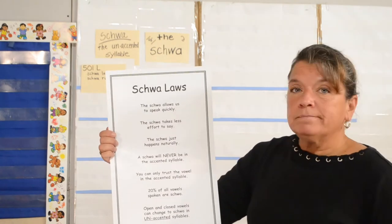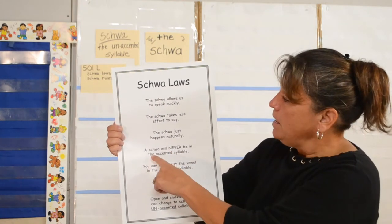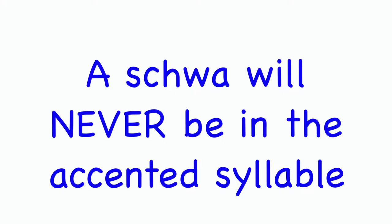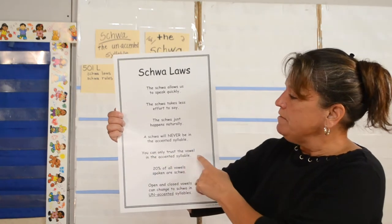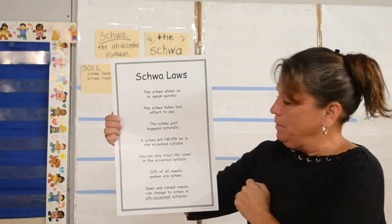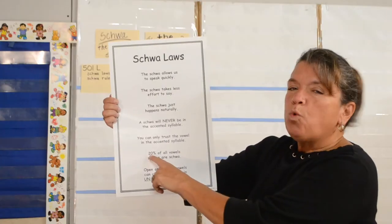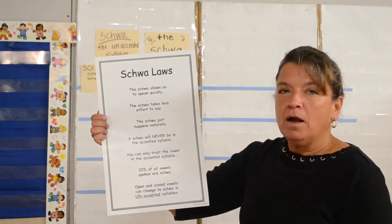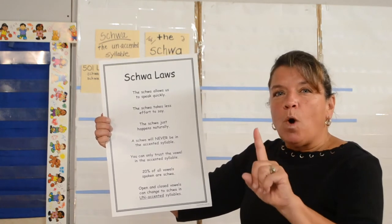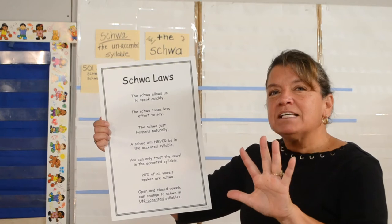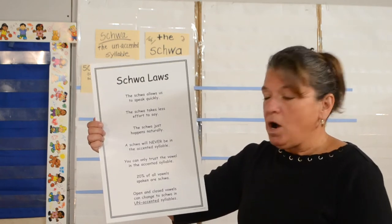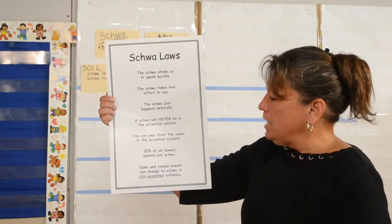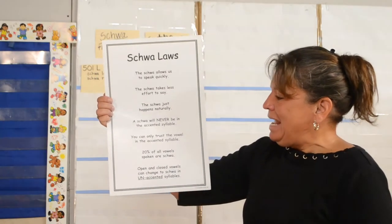The schwa just happens. A schwa will never, never be in the accented syllable. You can only trust the vowel in the accented syllable. Twenty percent of all vowels spoken are the schwa — that means one out of five syllables that come out of our mouth are the schwa. Open and closed vowels can change to schwa in unaccented syllables.